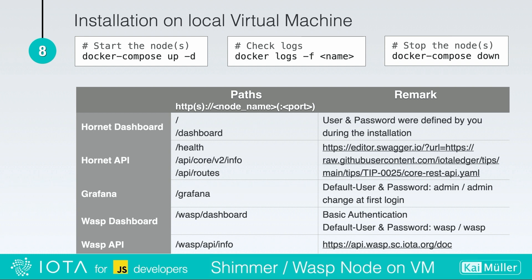To finally start our two nodes using docker compose up -d, I will use the logs command to check if everything goes well, and I will use the docker compose down command to stop the nodes. In the lower part you have a summary of how you can find the different dashboards and/or APIs.